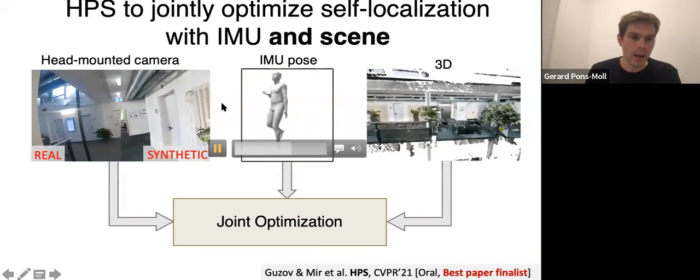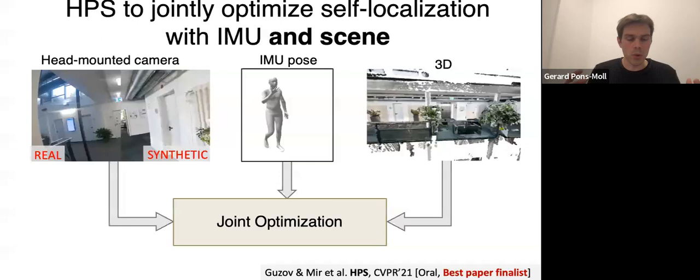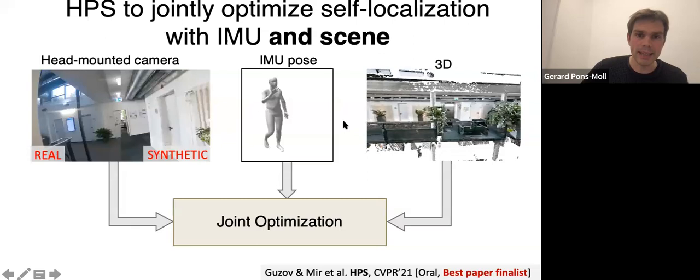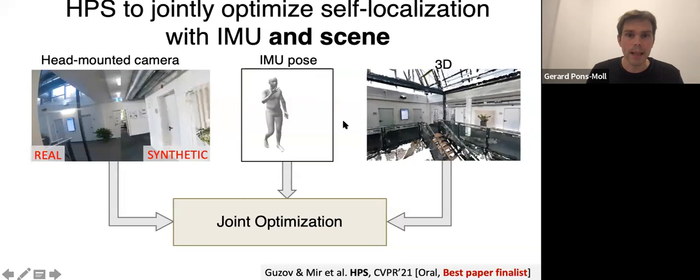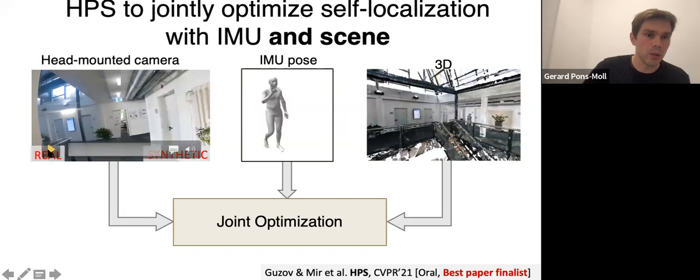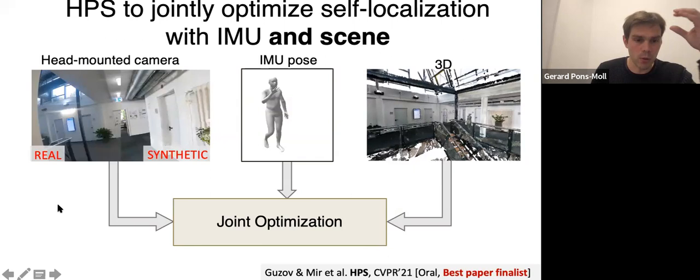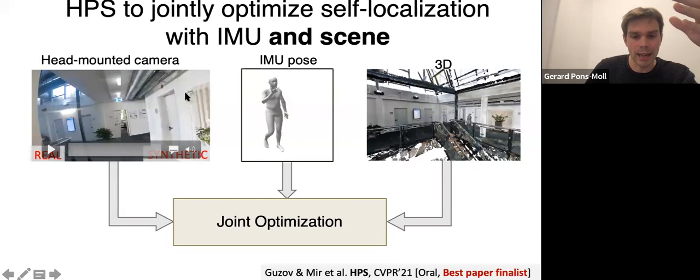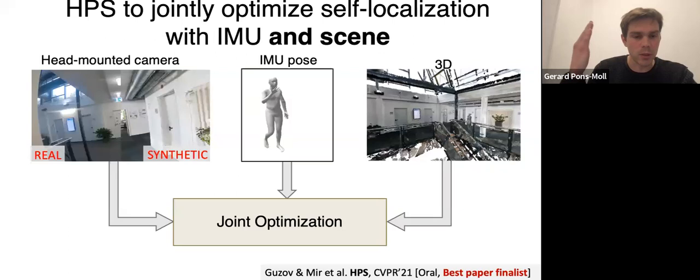The idea here is to use wearable sensors like IMUs to capture motion. However, with IMUs the problem is that they drift over time, and you also don't have a way to know where the person is within the 3D scene. In this project, we first pre-scanned the 3D world where the real person would interact, and then we solve for the motion of the person while simultaneously localizing where the person is in the 3D scene. We do this using visual localization — the real camera viewpoint from the head-mounted camera on the person is matched against the synthetic 3D world rendered from the localized camera.